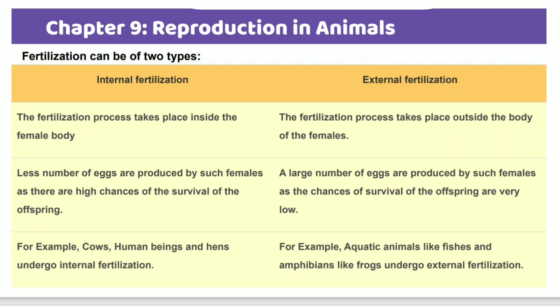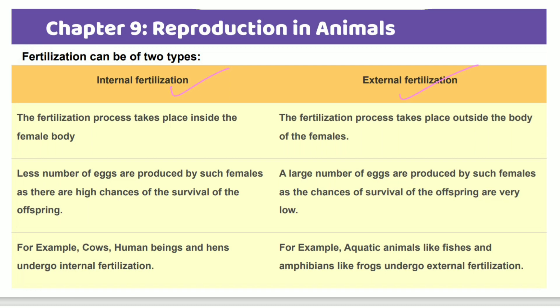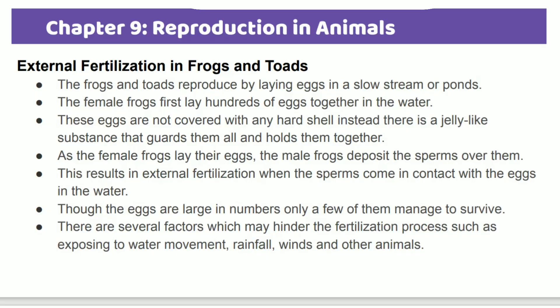There are two types of fertilization: internal fertilization and external fertilization. Internal fertilization takes place inside the female body — examples are cows and human beings. External fertilization takes place outside the body — examples are frogs and fish.